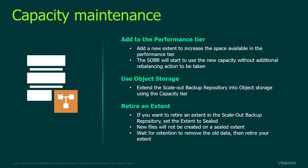You can also retire an extent. If one of those extents needs to be retired because of old hardware or other reasons, you simply seal it. We no longer write data to that extent, but you can still do restores. New and existing backup jobs go to a different extent, and when the retention period has expired you just remove it — no need to copy data around or adjust backup jobs.